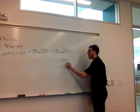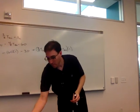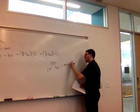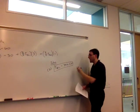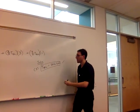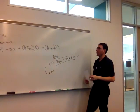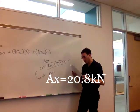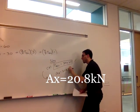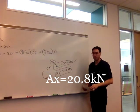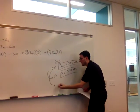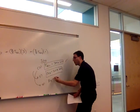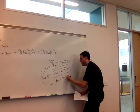So using equation 3, we can get the TBC is going to be 34.6 kilonewtons. It's a tension, it has to be positive. If we put equation 3 into equation 1, we can solve for AX. AX we get 20.8 kilonewtons. And if we put equation 3 into equation 2, we get AY. AY we get 87.7 kilonewtons.